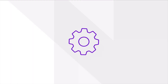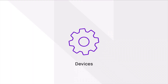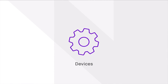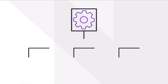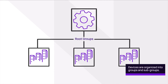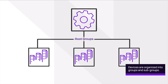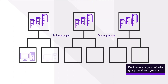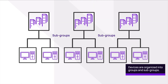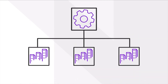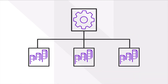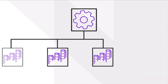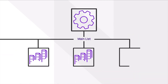Devices with agents installed are listed under the devices tab. The list is organized into root groups. If associated with a group, the device name will appear as a subgroup. If a device is not associated with a group, it appears in the main list.